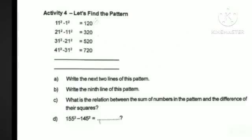Activity 4 — Let's find the pattern. The pattern is: 11 squared minus 1 squared, 21 squared minus 11 squared, 31 squared minus 21 squared, 41 squared minus 31 squared. Then 51 squared, 61 squared, then minus 1 squared, 11 squared, 21 squared, 31 squared, 40 squared, 50 squared. The results are 120, 300, 500, 700.